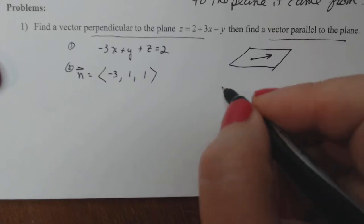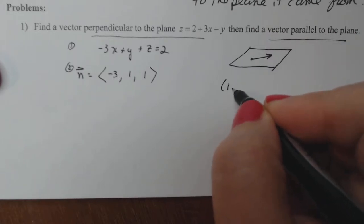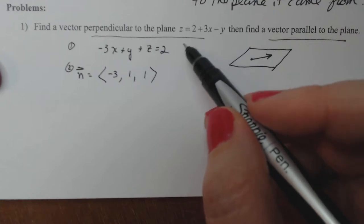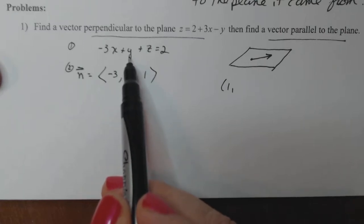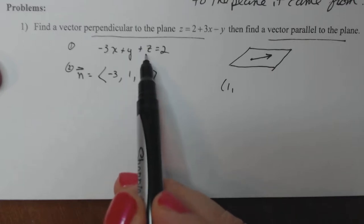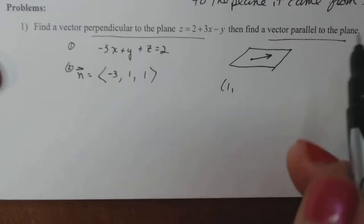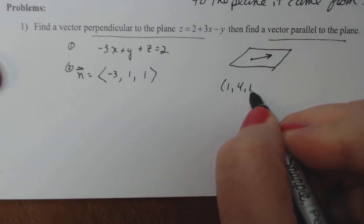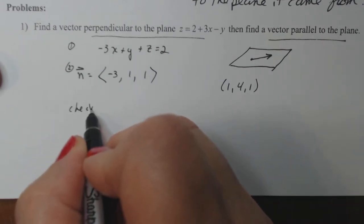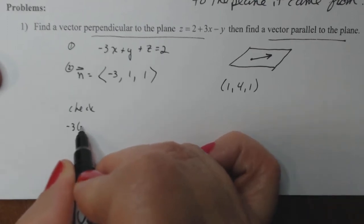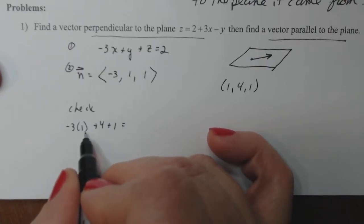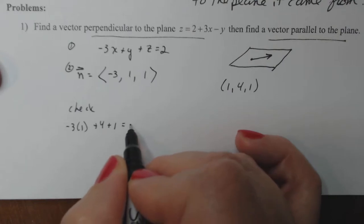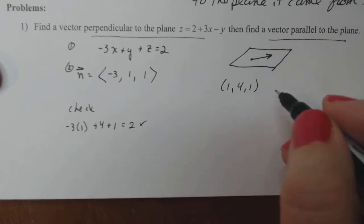So I have to find two points that lie on the plane. Let's see, I like this one better and I put a 1 here. That gives me negative 3, and if I put a 4 here, that gives me 1, and then I just need 1 more here. So 1, 4, 1. Make sure you check it. So I'll check down here.